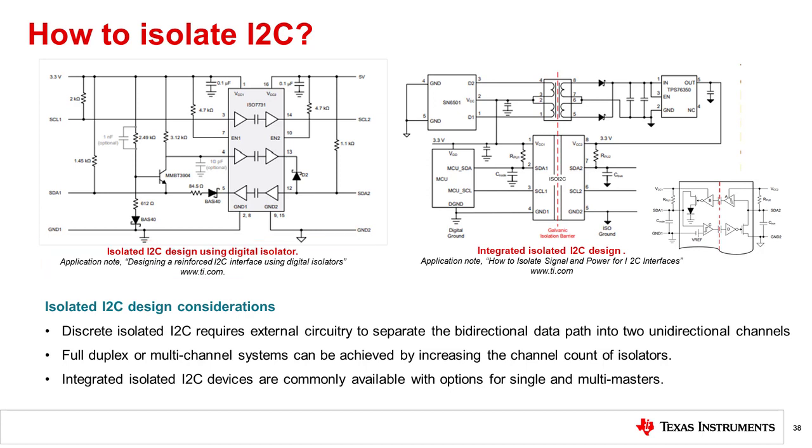The integrated I2C solution uses a similar approach with the use of isolated buffers and a comparator circuit. The bi-directional serial data line signal from the I2C bus is internally separated into two unidirectional signals that are isolated using the channels of the digital isolator. The isolated I2C devices are designed to interface with low capacitance nodes on the primary side and maximum loading of the I2C bus on the secondary side. Isolated I2C devices are commonly available with options for single and multiple masters.